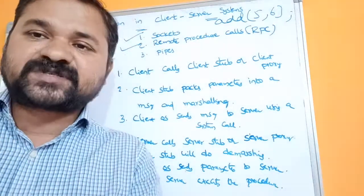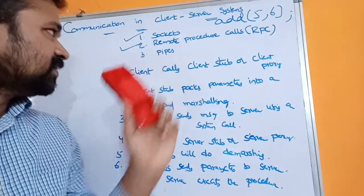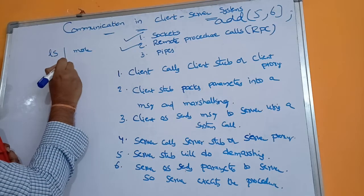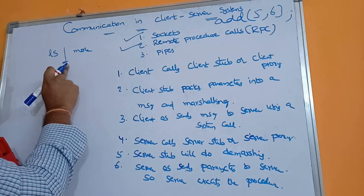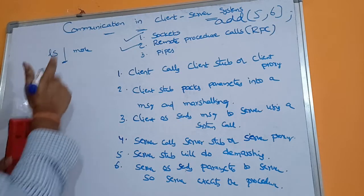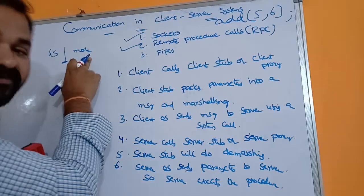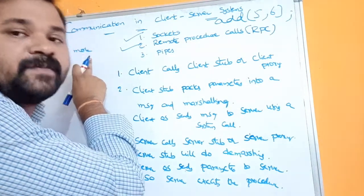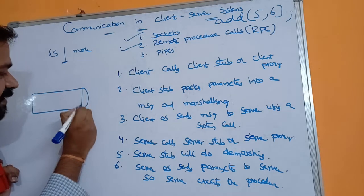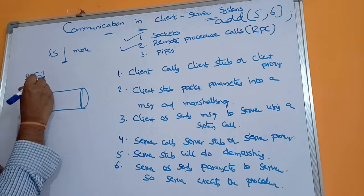The last method is pipes. By using pipes, we can make communication between two processes — between client and server as well. The best example for a pipe is the command 'ls | more'. This pipe symbol sends the output of one process as input to the next process. When this pipe command is executed, the output of 'ls' is sent as input to the 'more' command. A pipe contains two descriptors.